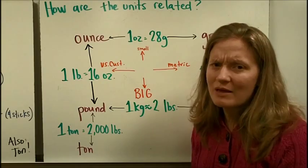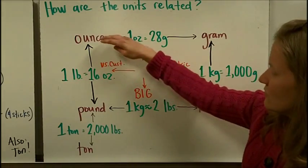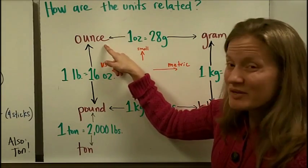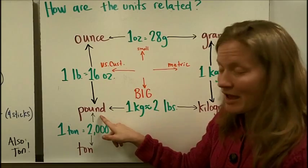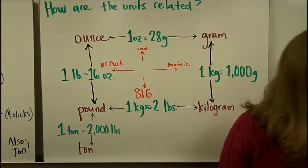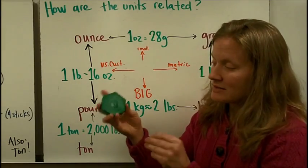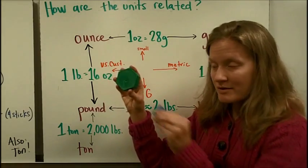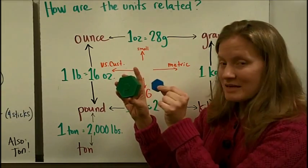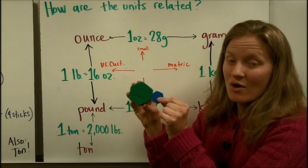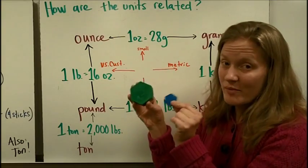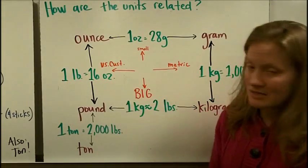Let's look at how ounces and pounds are related. Remember that an ounce is about a piece of bread, and a pound is about four sticks of butter. In class you'll use weight sets — the big one is a pound, and the blue one is an ounce. It takes 16 ounces to make a pound, or about 16 pieces of loaf bread to make one box of butter. So one pound equals 16 ounces.